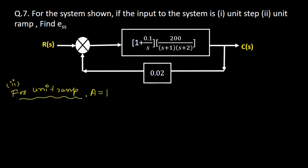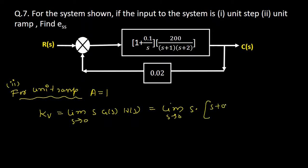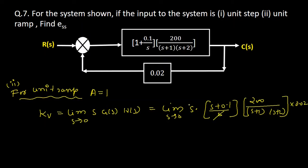For unit ramp, the magnitude a is also equal to 1. When a unit ramp is given, the velocity error coefficient Kv controls the error. Kv equals the limit as s tends to 0 of s into G(s)H(s). Substituting the expression, we get the limit as s tends to 0 of s into (s plus 0.1) divided by s, into 200 divided by (s plus 1)(s plus 2), into 0.02. The s terms cancel out.